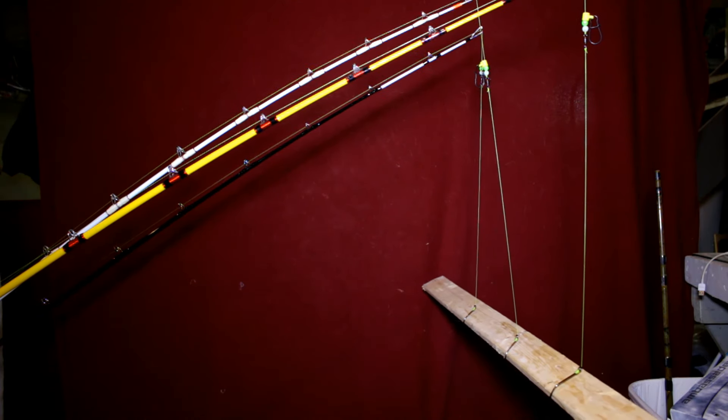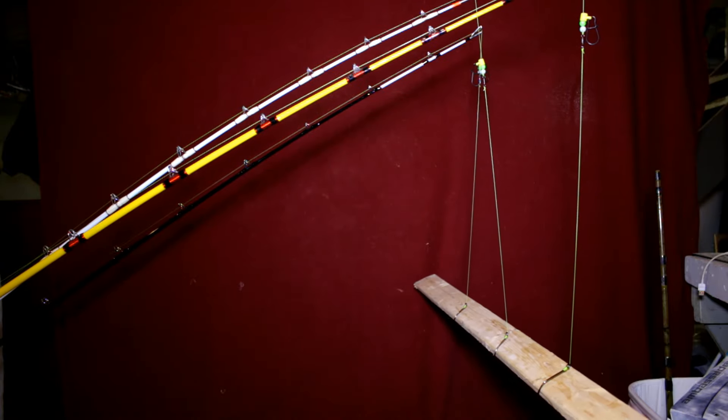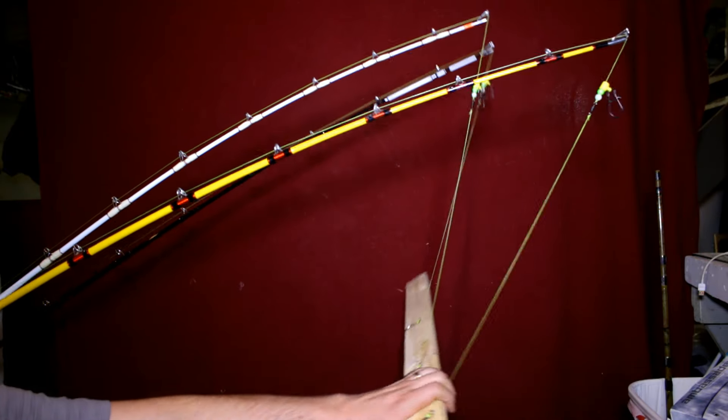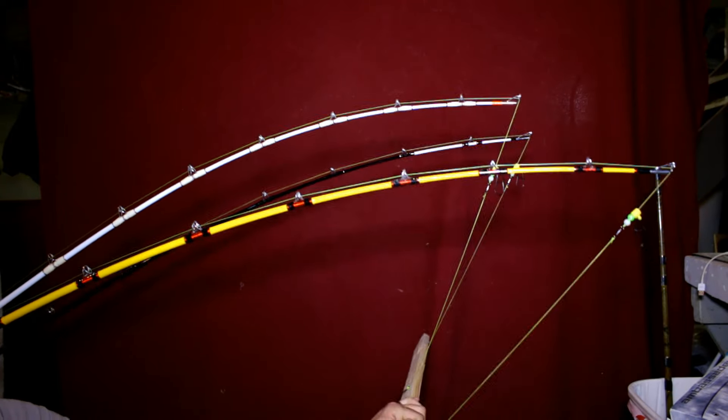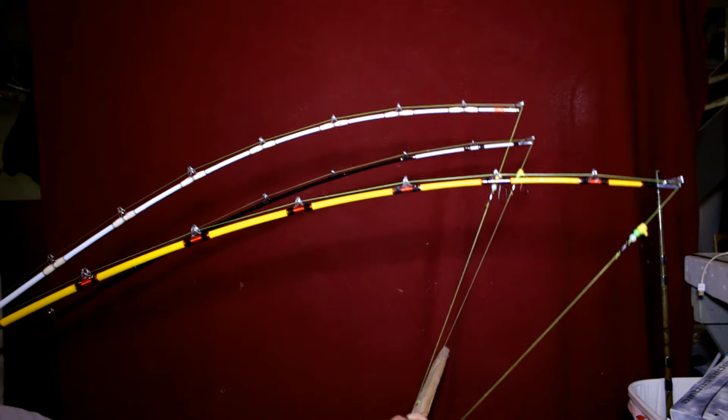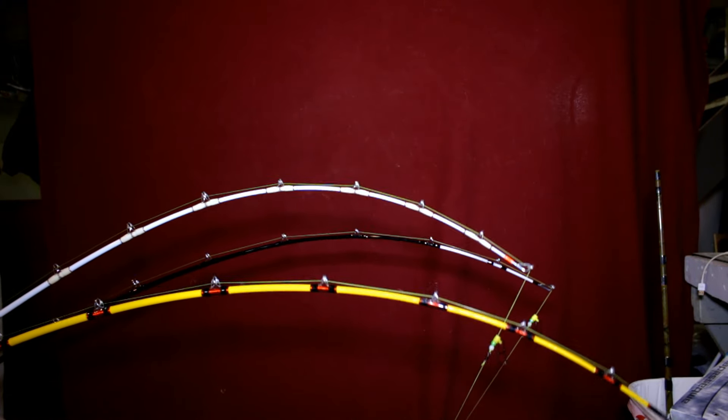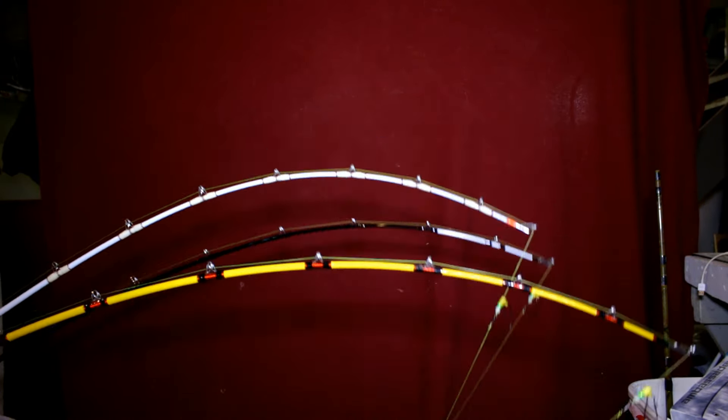If I just pull down here, you should be able to see the different actions and where the bends are in the rod.